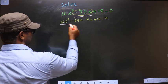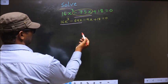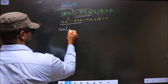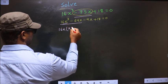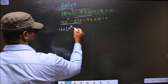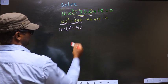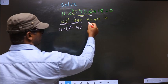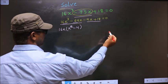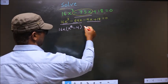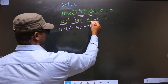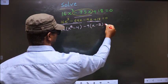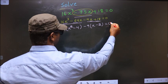From the first two terms, what can be taken out common is 16x, so here you get x squared and here you get minus 4. In the same way, what can be taken out common from the next two terms is minus 9, so here you get x and here you get minus 2, equal to 0.